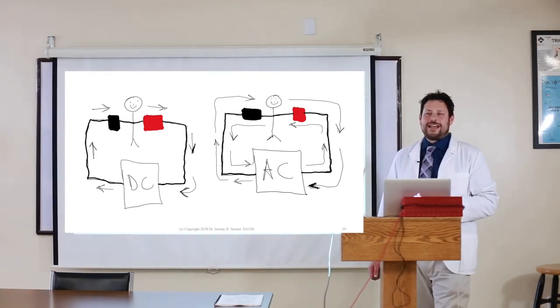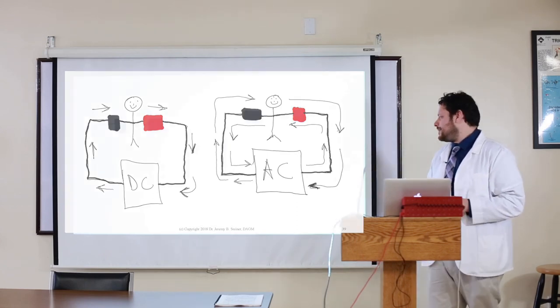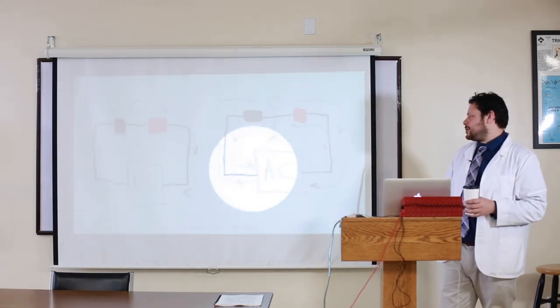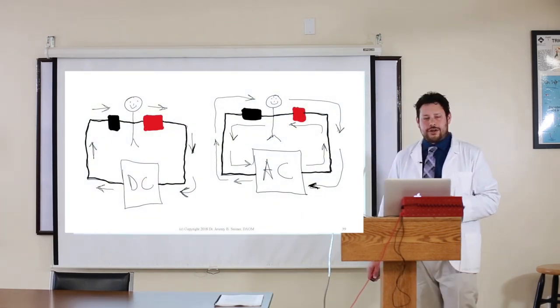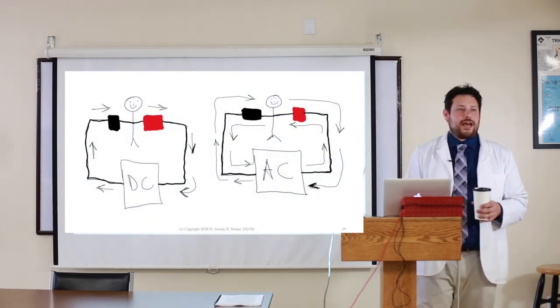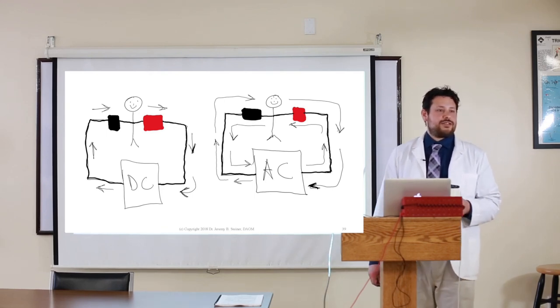Did everybody hear her? She's asking, because we're using a biphasic alternating current machine, the black and the red don't really matter. That's true and not true. Here's why. The Itos have unbalanced circuitry.